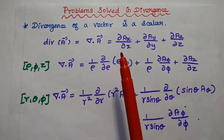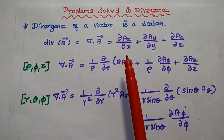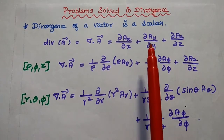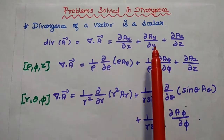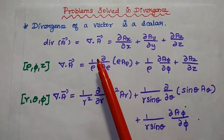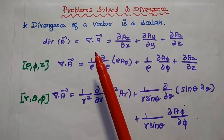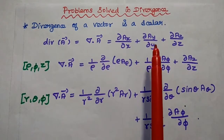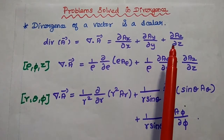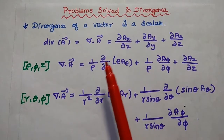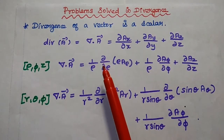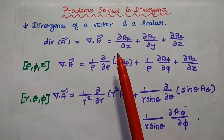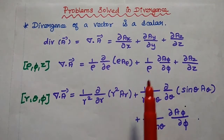Dear students, now we are going to solve important problems in divergence. In general, the divergence of a vector is a scalar quantity. Let's start with the formula of divergence in different coordinate systems.